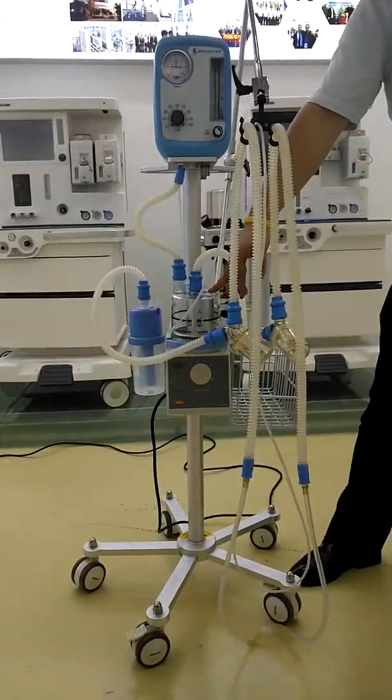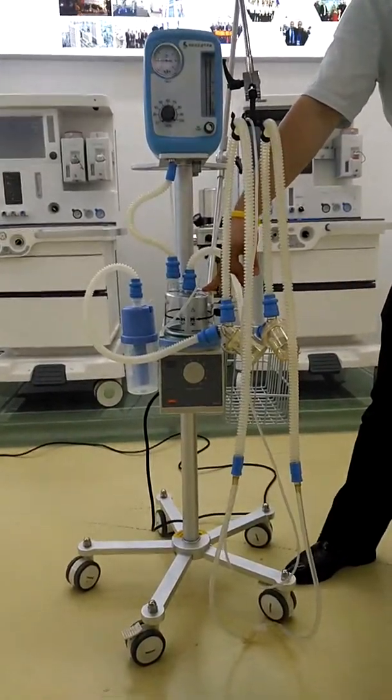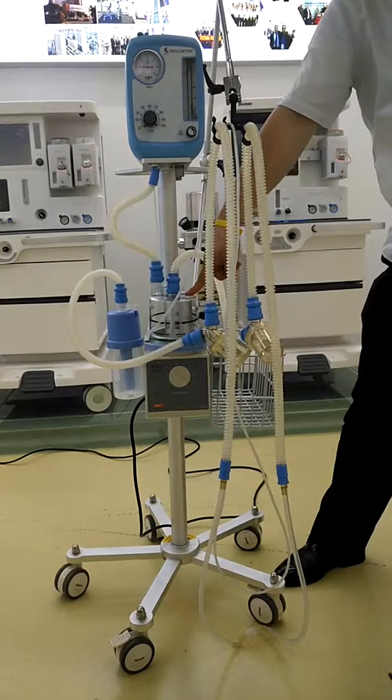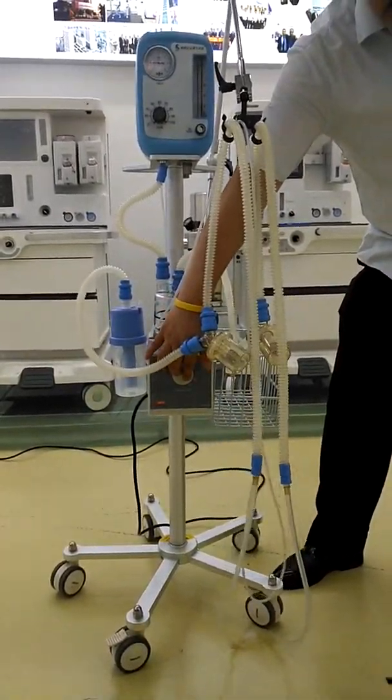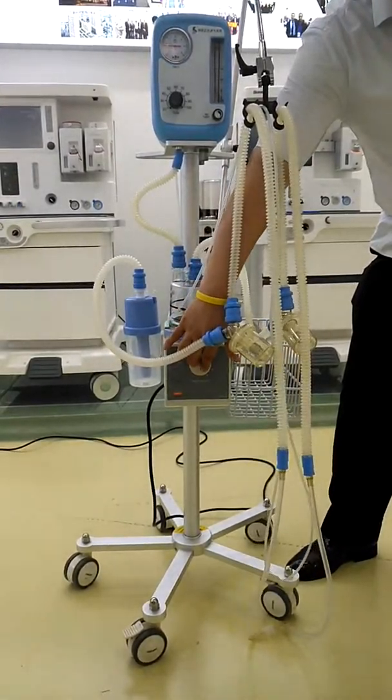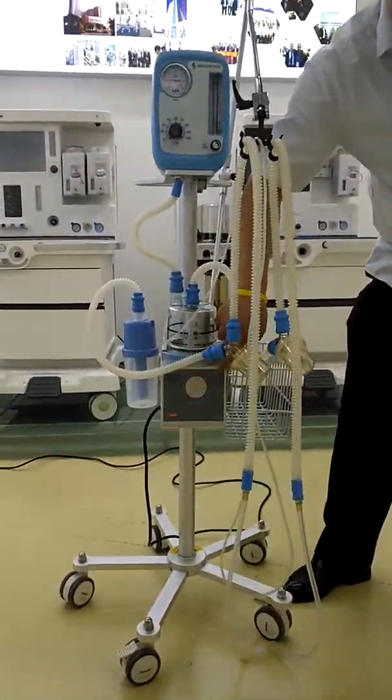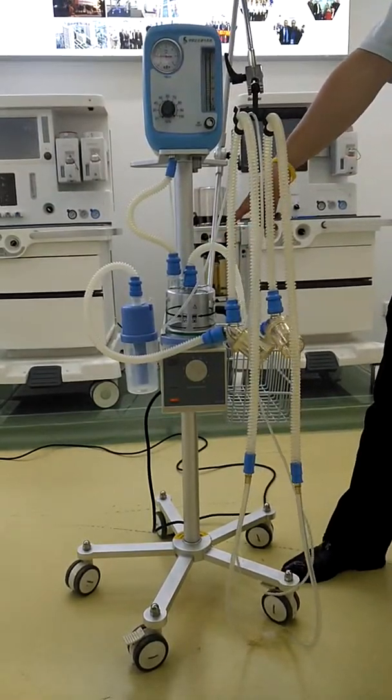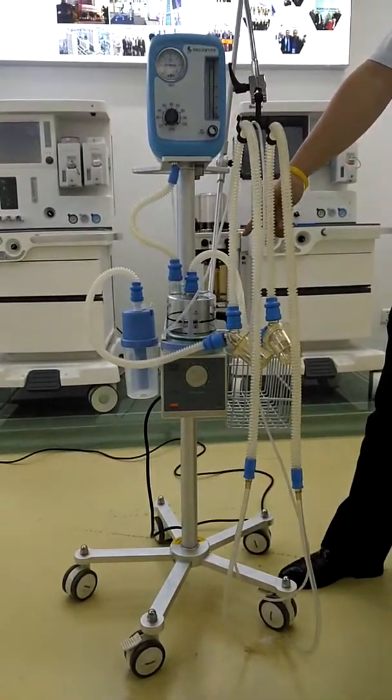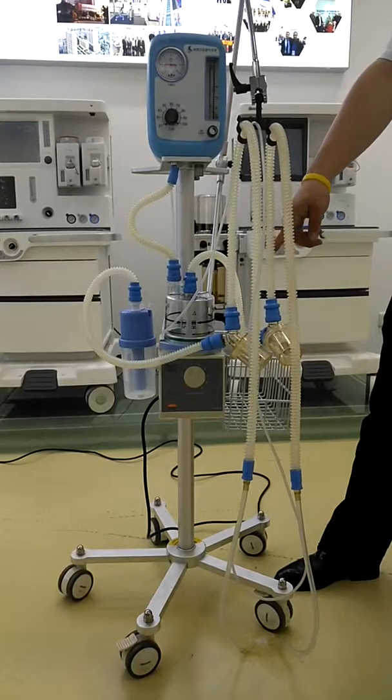This is the humidifier. We have three types and here we're using the basic one. You can adjust the temperature by rotating this button. We have different levels, and usually we need to check on the thermometer. If the temperature is around 35 degrees, we can stop adjusting.